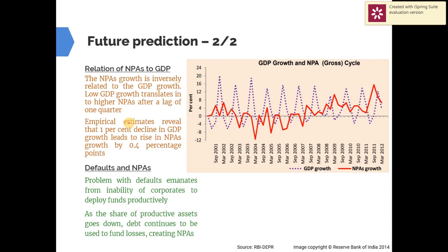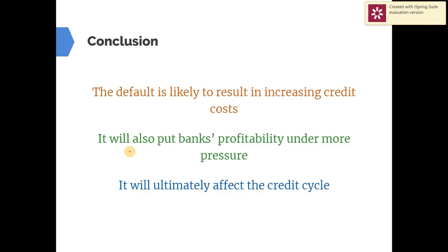To understand this better, we need to understand the relationship between NPA and GDP. Every business, when taking a loan, predicts their project's future production. If production increases due to improved demand, they can repay loans from higher revenue. But due to a slowdown or slump in demand, companies shift use of debt from productive assets to funding losses — consequently losing their ability to repay loans. Therefore, GDP growth is closely related to NPA growth. Empirically, a 1% decline in GDP growth raises NPA by 0.4 percentage points.